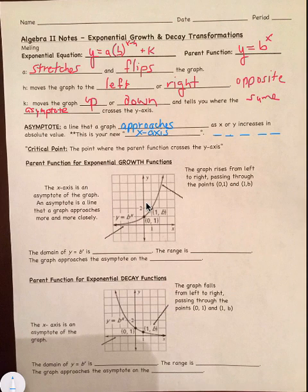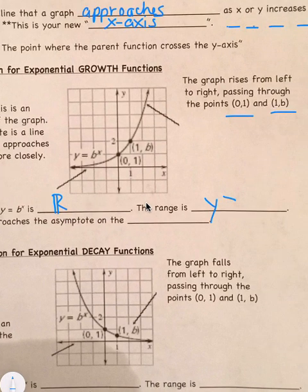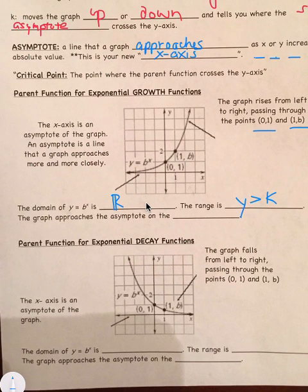So if we look at parent function for exponential growth functions, the x-axis is an asymptote of the graph. That's a line that we just talked about. The graph rises from left to right, passing through the points (0,1) and (1,b). Those are both very important. (0,1) is the critical point. (1,b) is always the second point that the graph passes through. The domain of the parent function b to the x is all reals. Because you can see it goes from left to right. The range is y is greater than k. And in this case, k is just the x-axis because it didn't shift up. The graph approaches the asymptote over on the left. So you can see it gets closer and closer as it moves to the left. That's a growth function.